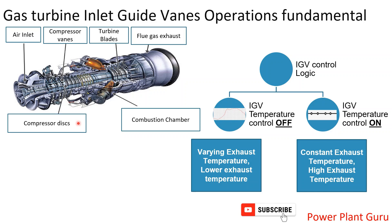In temperature control mode OFF, the IGV is fully open and it is not going to control the temperature. If you change the load — if you increase the load when the machine is not at full load — the temperature will increase. If you decrease the load, the temperature will decrease. This is because the IGV is already fully open, so maximum air quantity is flowing. Increasing load means increasing fuel, which increases temperature, and reducing load reduces fuel, reducing temperature.